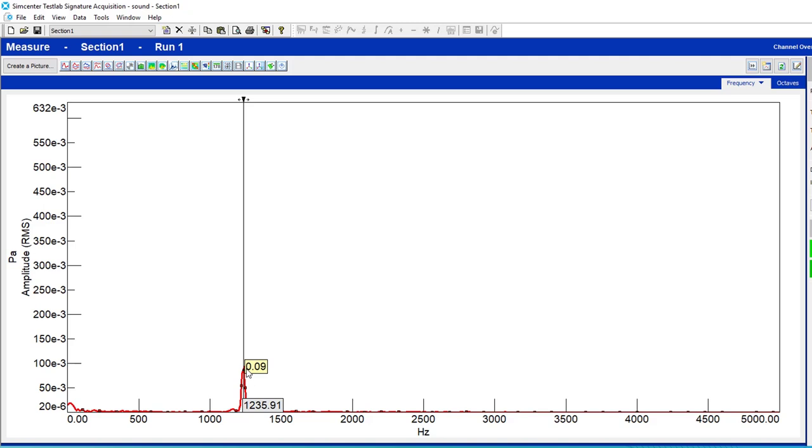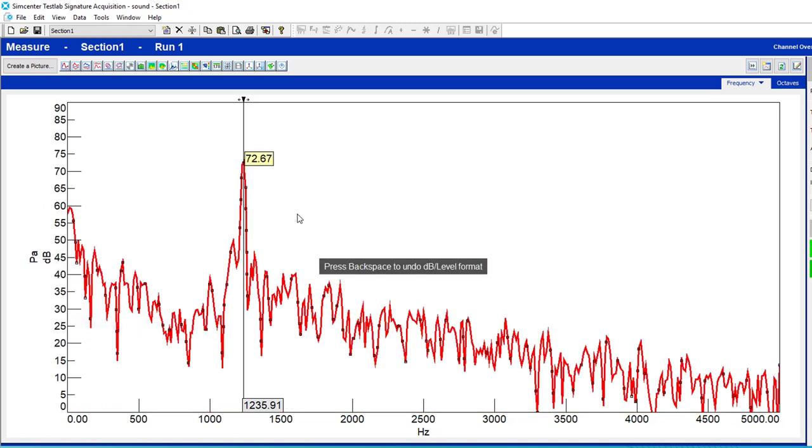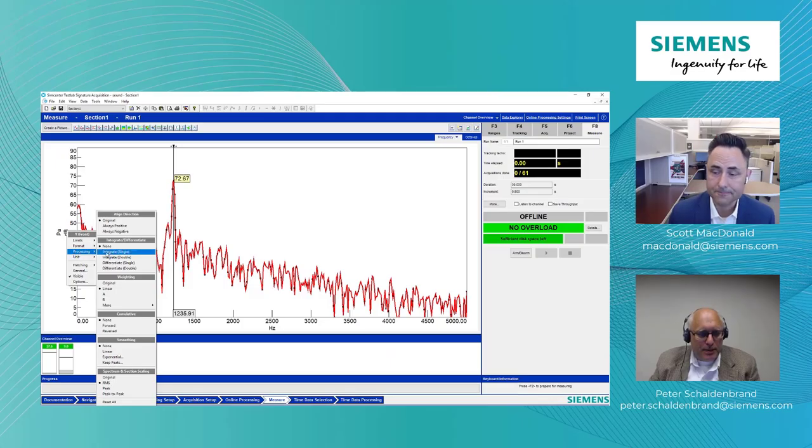And so you might be wondering, what is that in decibels? And it's pretty easy here in the SimCenter Test Lab software. I can go right-click on the Y-axis, format, dB, and it'll plug that Pascal value into the equation you showed earlier, and it converts it, and we get it, it shows it as 72.67 decibels. Pretty cool, huh, Scott? Very cool.